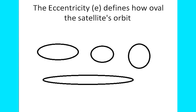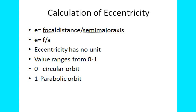We'll look into the next slide. How to calculate the eccentricity? Eccentricity is calculated using focal distance divided by semi-major axis, that is F by A. I have denoted focal distance by F and semi-major axis by A. Eccentricity has no unit. This value ranges from 0 to 1.